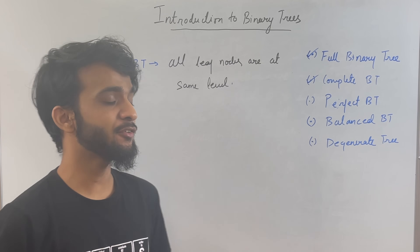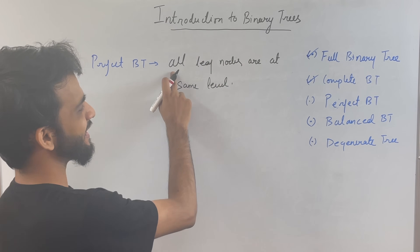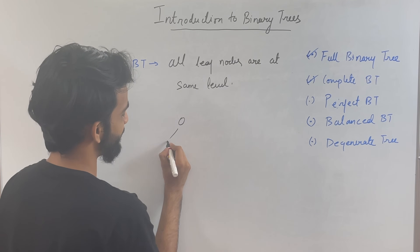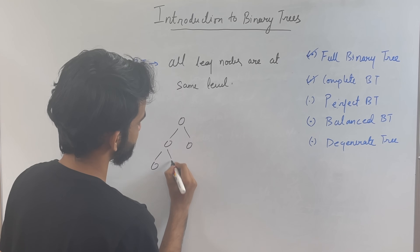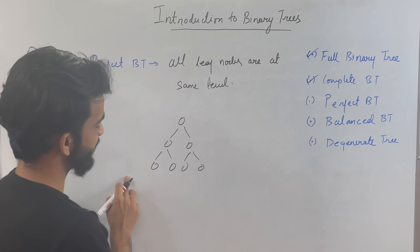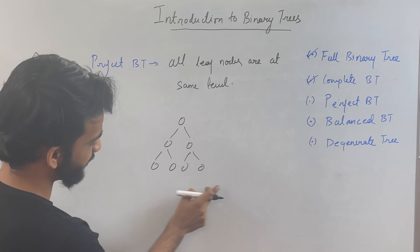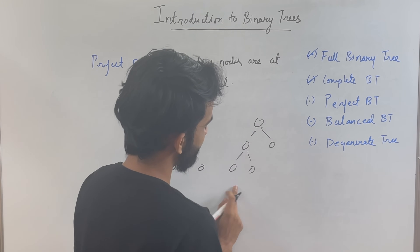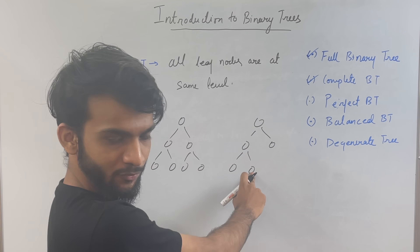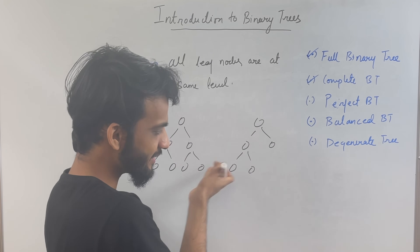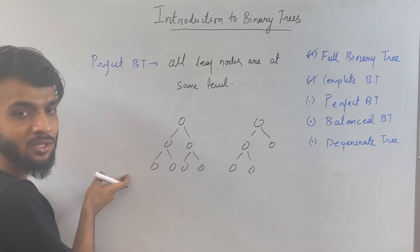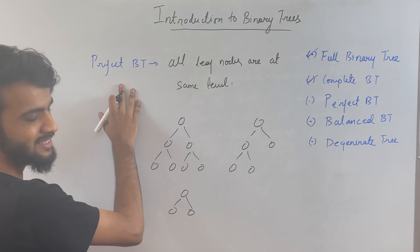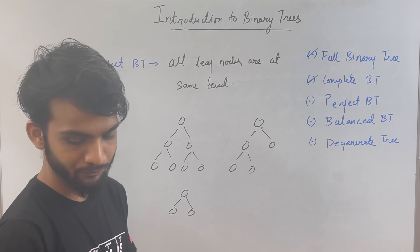The next type of binary tree is the perfect binary tree, which states that all leaf nodes are at the same level. This is a perfect binary tree because all leaf nodes are at the same level. This is not a perfect binary tree because the leaf nodes are at different levels — they all have to be on the same level.